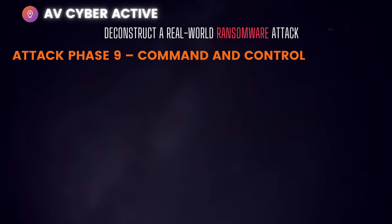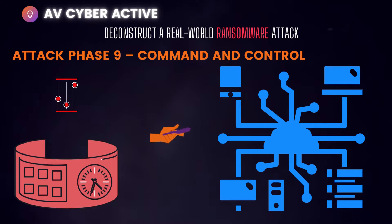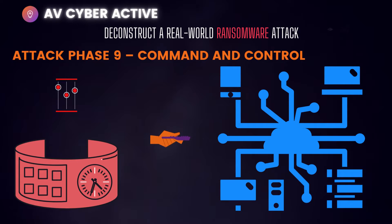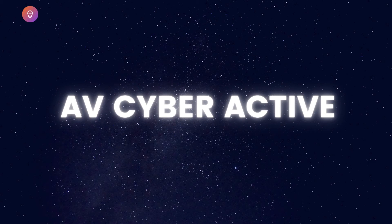Phase nine is Command and Control (C2), which consists of techniques adversaries use to communicate with systems under their control within a victim's network. Adversaries commonly attempt to mimic normal or expected traffic to avoid detection. There are many ways an adversary can establish C2 with various levels of stealth, depending on the victim's network structure and defenses.